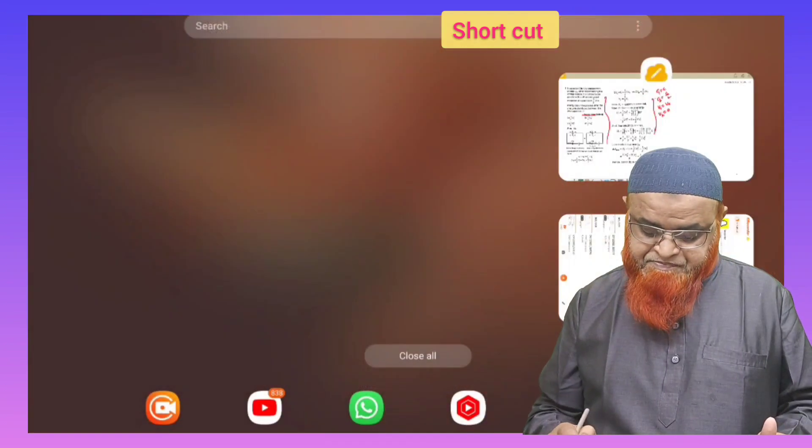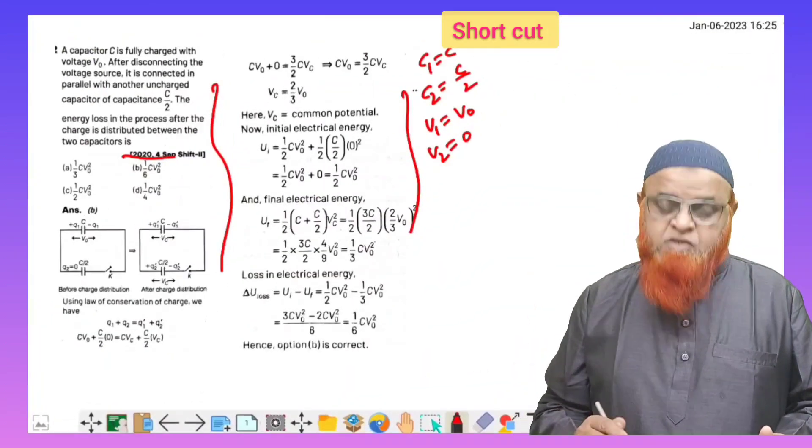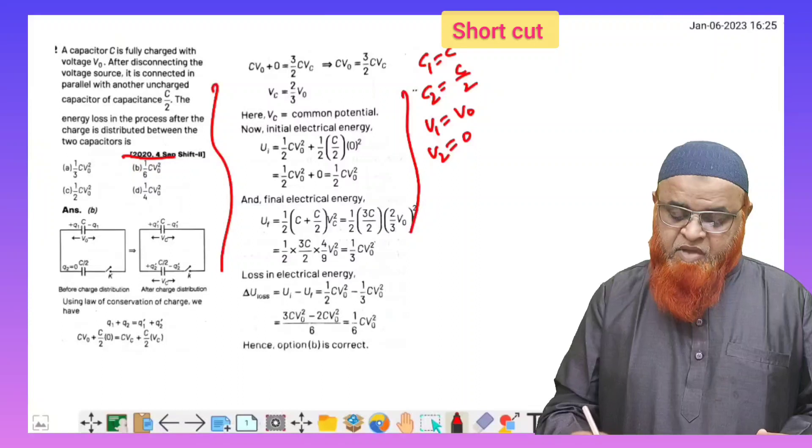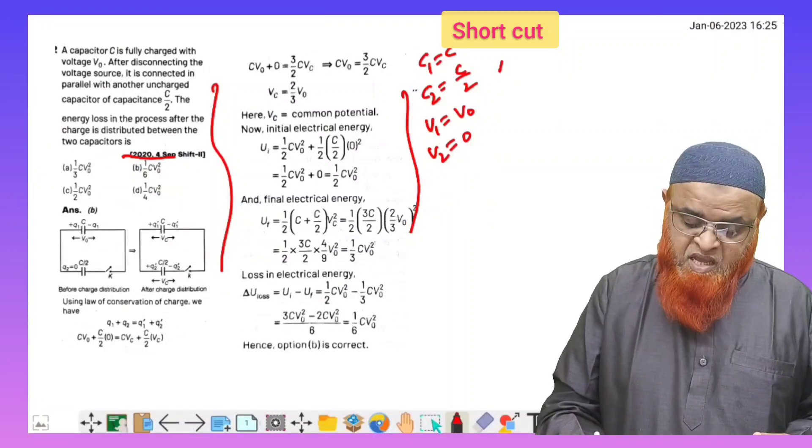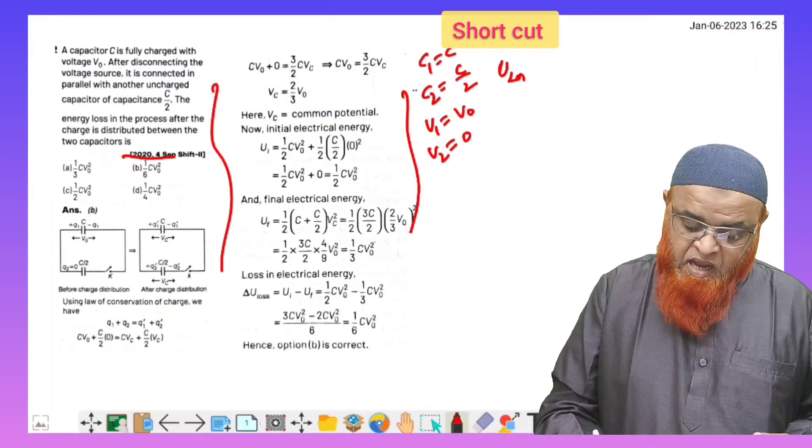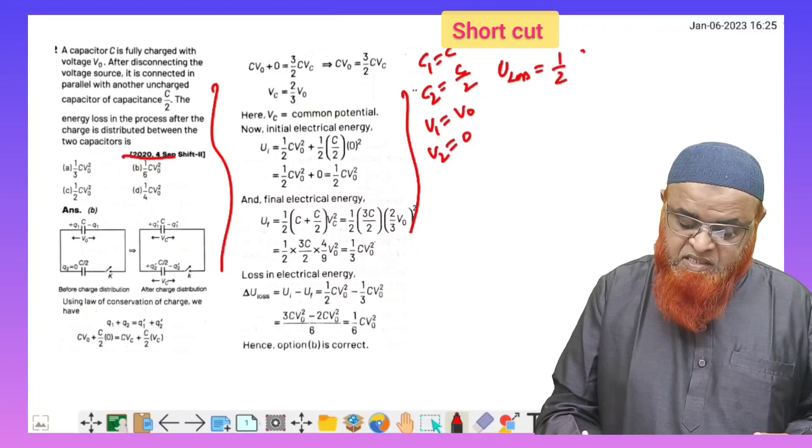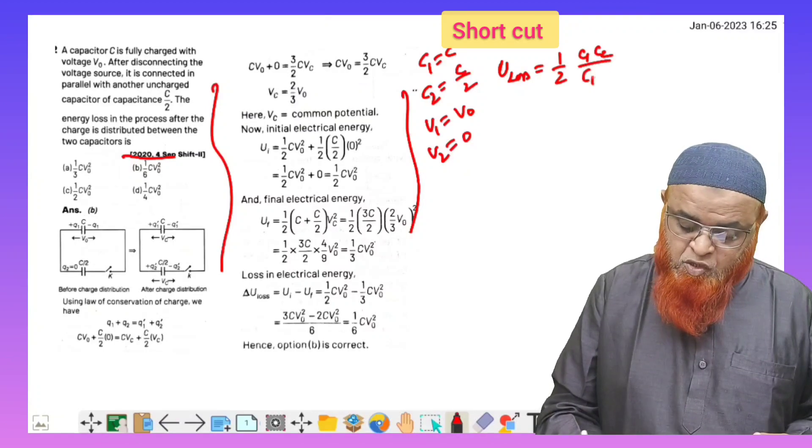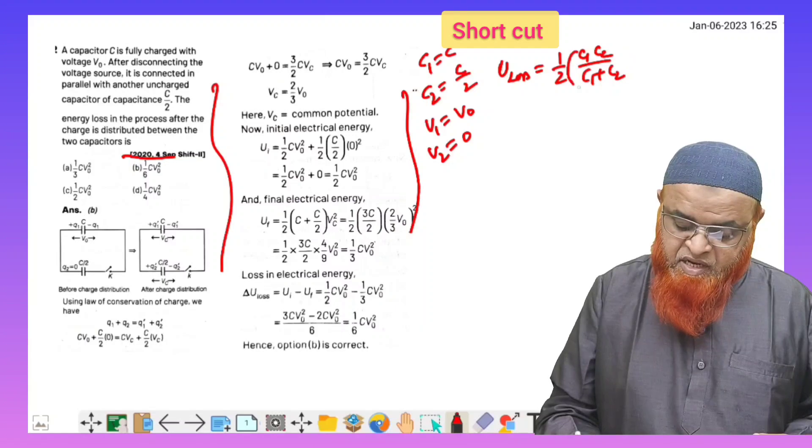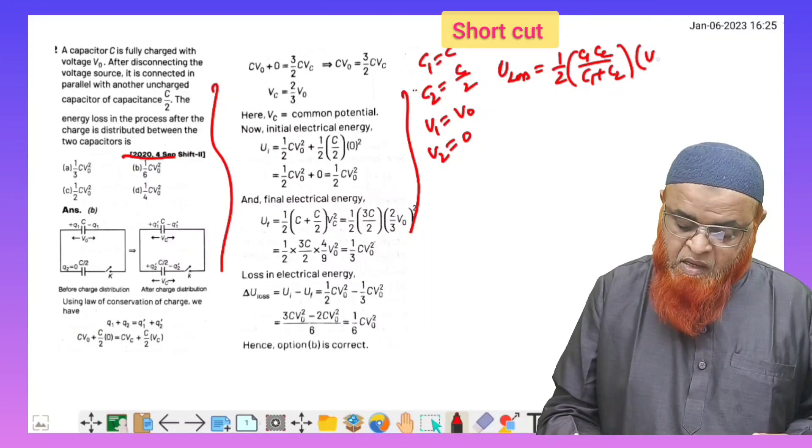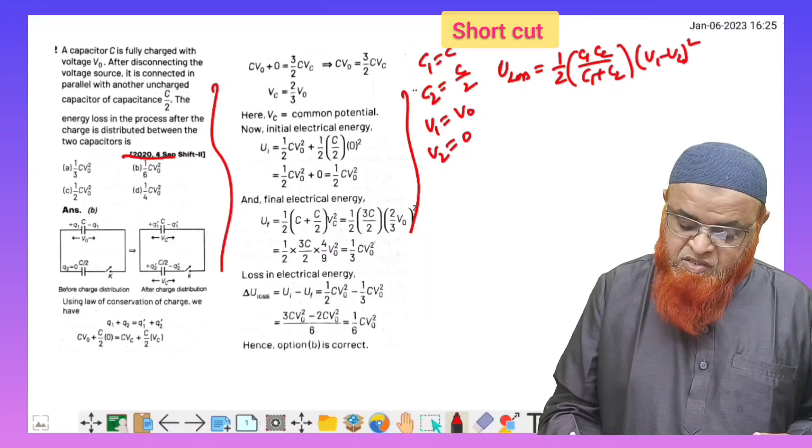What is the shortcut formula behind this? The shortcut formula for energy loss is half C1 C2 divided by C1 plus C2, into V1 minus V2 whole square. By using this shortcut formula, you can solve the problem in just seconds.